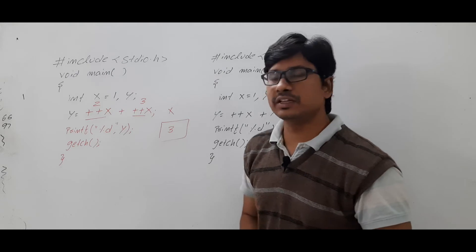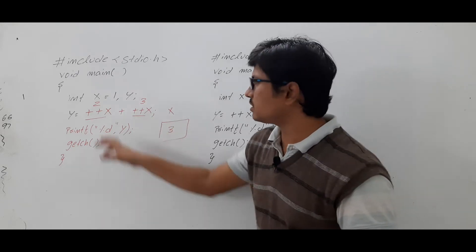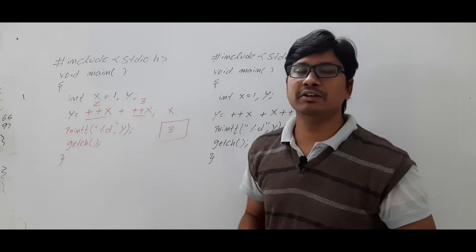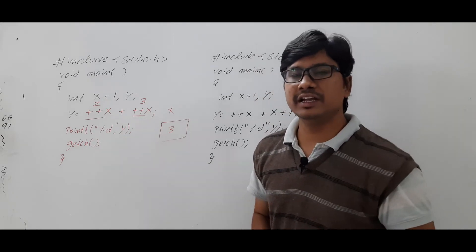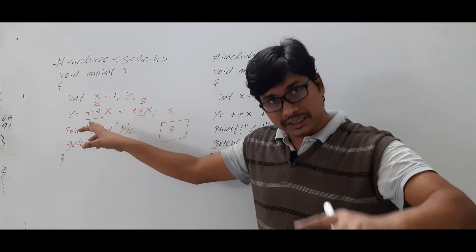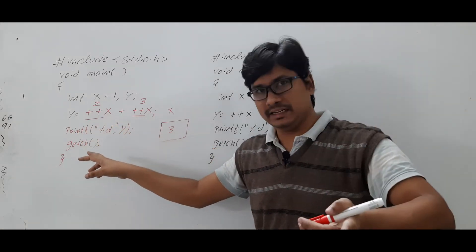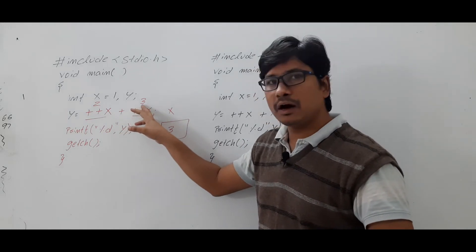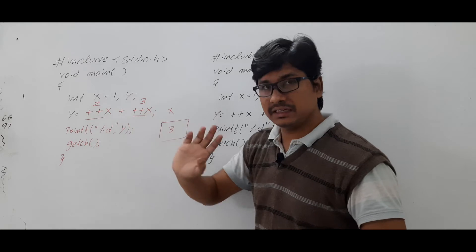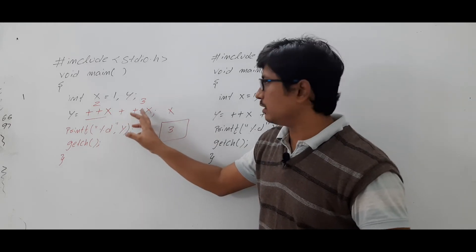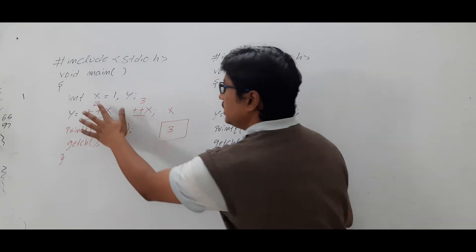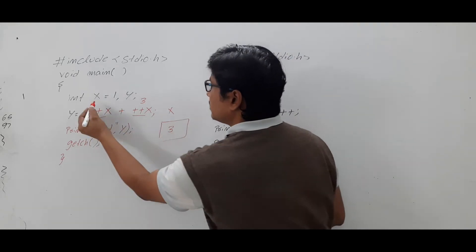So lot of students will think that sir it is very simple question 2 plus 3, y value will become 5 so it will print the y value as 5. If you are thinking like that it is wrong. Why? I said first you increment it then assign. Now here you have incremented but still you did not assign. Here you have incremented. Now the x value is 3. That value will be assigned here. So here instead of 2 you will get the 3.